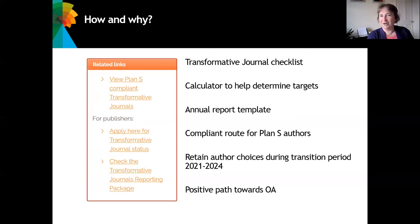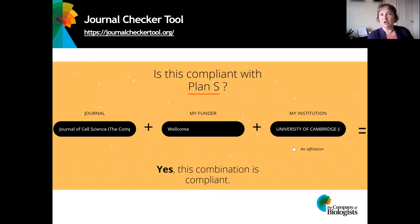Your rewards are that you'll be providing a compliant route for your Plan S authors, and at the same time you'll retain author choices for those authors who are not yet ready for compulsory open access during this transition period 2021 to 2024. It provides a positive path towards open access. When your authors go to the journal checker tool, no matter what their funder or their institution, they will be told yes — publishing in your journal has a compliant option for them. Thank you very much.